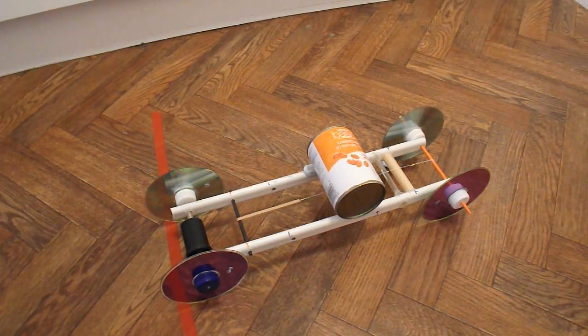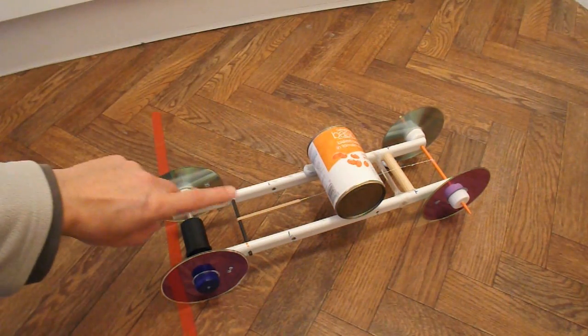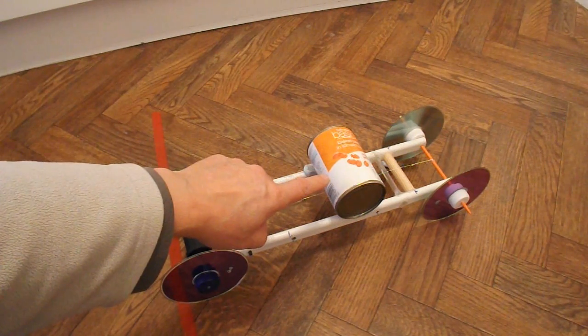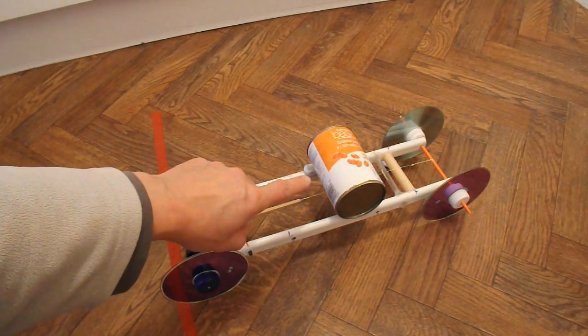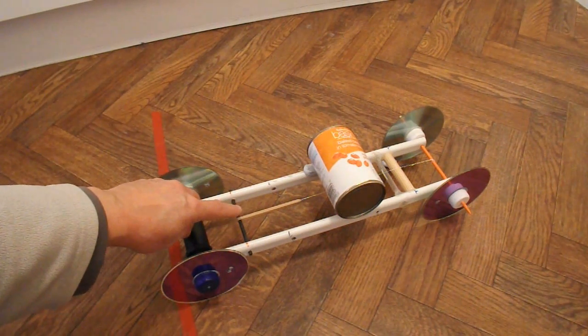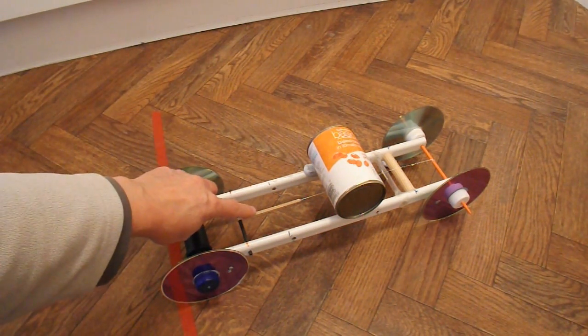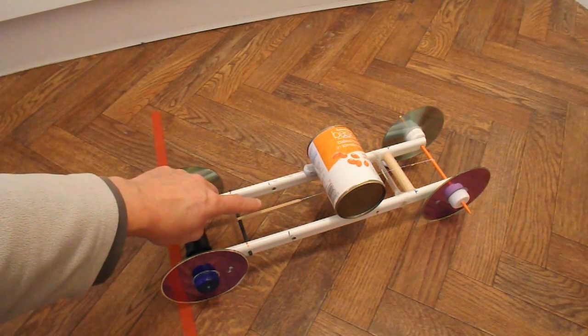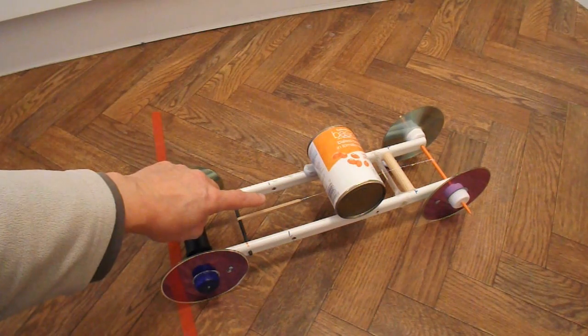Nearly forgot to do the summary. So, object of the exercise, carry a one pound weight for as far as possible using a size sixty-four rubber band. That rubber band is not a size sixty-four. It's significantly smaller. And we did about twelve metres with it, just short.